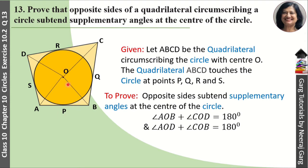So we need to show that angle AOB plus angle COD equals 180 degrees, since AB and CD are opposite sides. Similarly, angle AOD plus angle BOC should also equal 180 degrees.